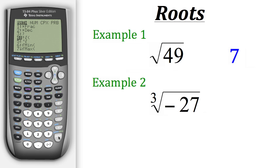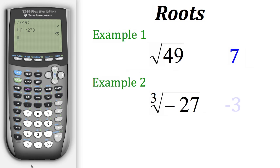So we could go down to that and hit Enter. Now we have the cubed root symbol up here. We just need to plug in negative 27, and then close the parenthesis, and then hit Enter. So here we can see that the cubed root of negative 27 is negative 3.